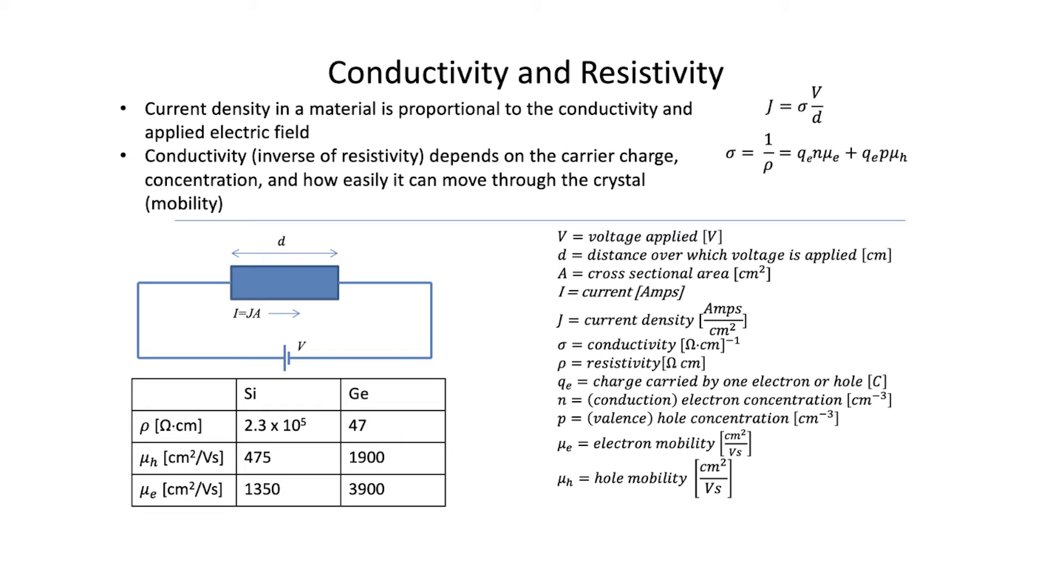If we look down here in the table of material properties for the two materials silicon and germanium, you'll notice that for silicon, it has quite a high electrical resistivity compared to germanium. Germanium still doesn't really conduct electricity very well, but it's certainly more of a conductor than silicon is. It's a lot easier for the electrons to be promoted at room temperature into the conduction band for germanium than it is in silicon.